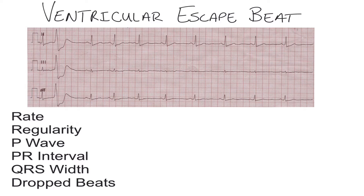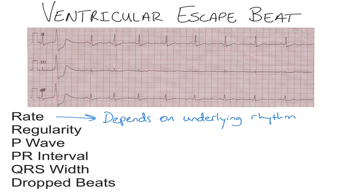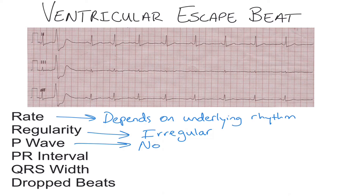In this video we're going to learn about ventricular escape beats, which vary slightly from PVCs or premature ventricular contractions. With a ventricular escape beat, your rate depends upon the underlying rhythm. It's an irregular rhythm, there are no P waves in the actual ventricular escape beats themselves, and there's no PR interval.